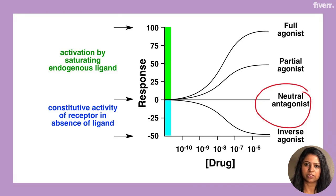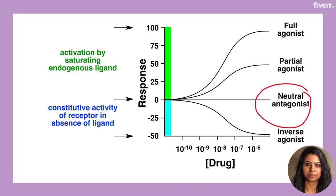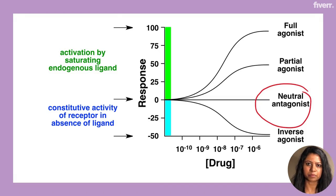Now let's take a look at the different types of antagonists. An antagonist by itself does not have any inherent activity on the receptor. When an antagonist binds to a receptor, it simply prevents the agonist from binding to the receptor. An example is propranolol, which is a beta blocker. When it binds to the beta-1 receptor, it prevents binding of epinephrine to the beta-1 receptor.